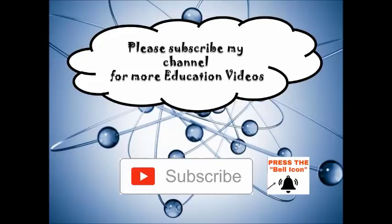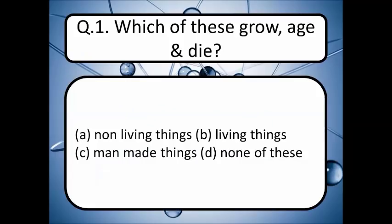Let's start with the first question: which of these grow, age and die? Option A is non-living things, B is living things, C is man-made things, and D is none of these. Pick your answer and write it down in the comment box. The correct answer is option B — living things.